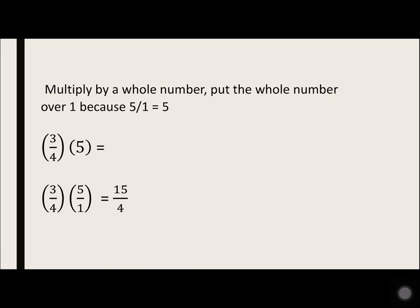To multiply by a whole number, put the whole number over 1 because 5 over 1 equals 5. So 3 over 4 times 5 is 3 over 4 times 5 over 1. 3 times 5 is 15, 4 times 1 is 4.